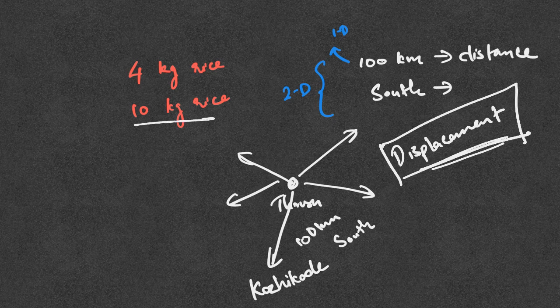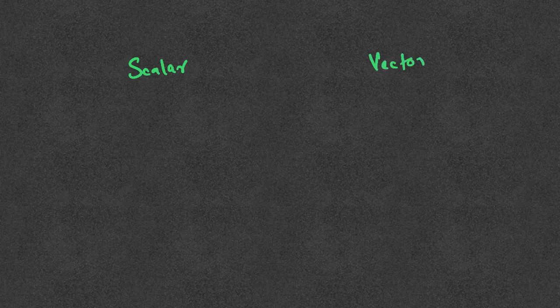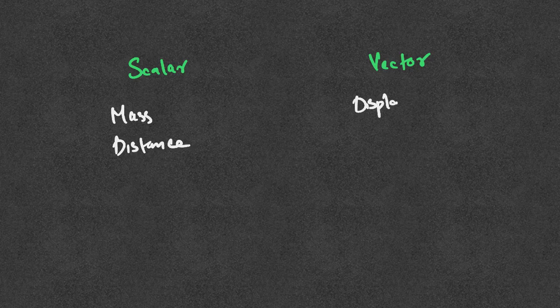Here is a test: 10 kilograms, 5 grams — what do we tell about the distance? The mass is a scalar quantity. Let us know what quantities and physical quantities are. Mass is scalar. Distance is scalar. Displacement is a vector.